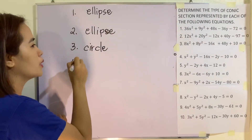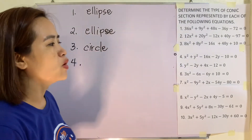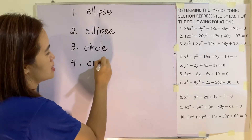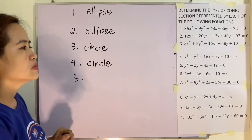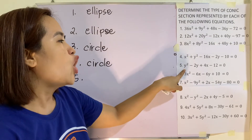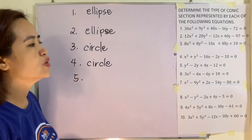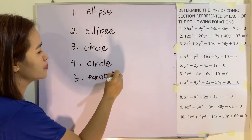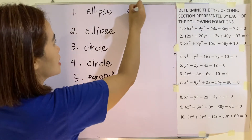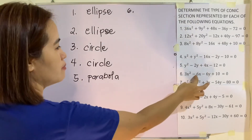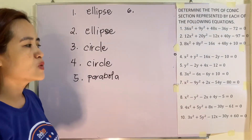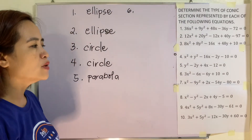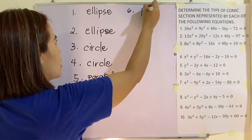For number four, we have x squared and y squared — both positive with no numerical coefficient. Therefore, it's a circle. For number five, only y has a squared term. Therefore, it is an equation of a parabola. Number six: 3x squared minus 6x minus 6y. Notice that only x has squared. Therefore, this is also a parabola.